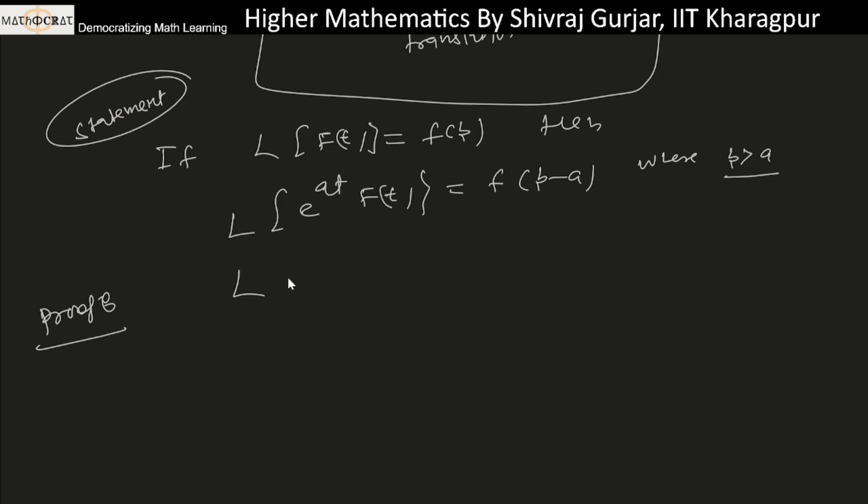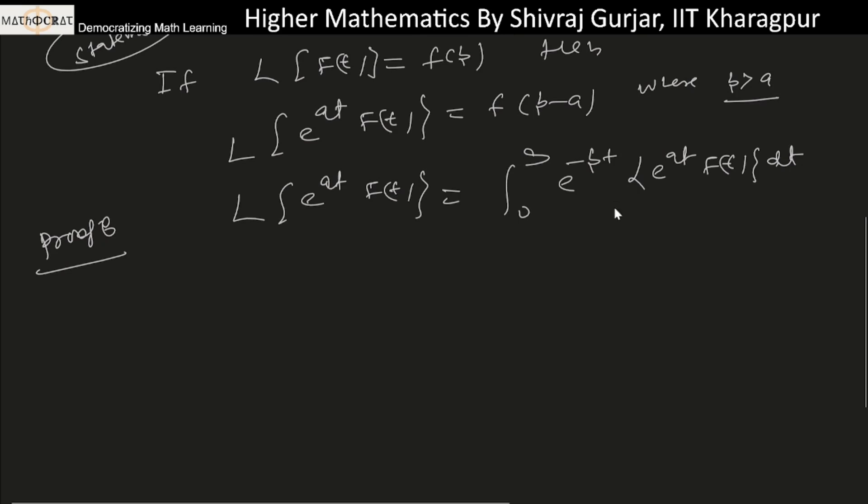Okay, Laplace of e to the power at times f(t) can be written as zero to infinity, e to the power minus pt, the function e to the power at times f(t) dt. So if we simplify, this will be zero to infinity e to the power minus (p minus a)t times f(t) dt.